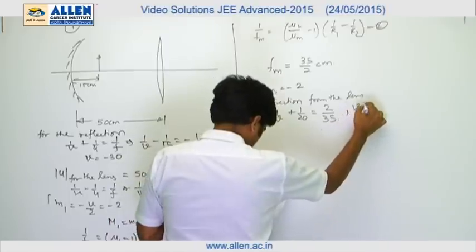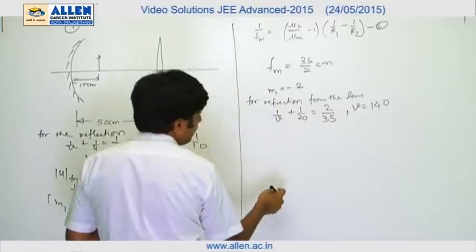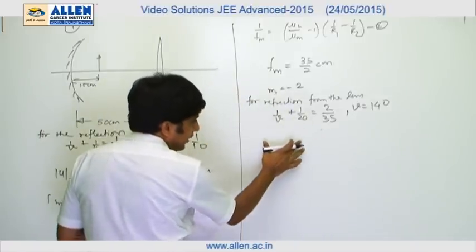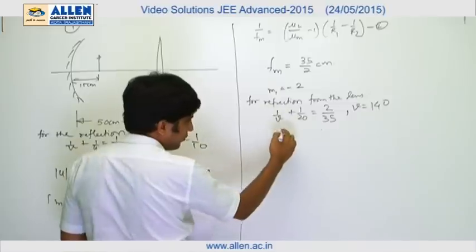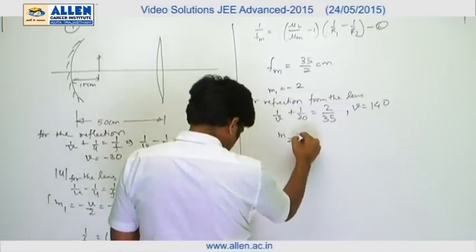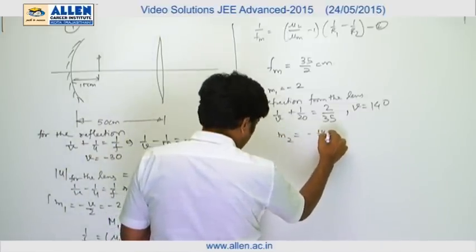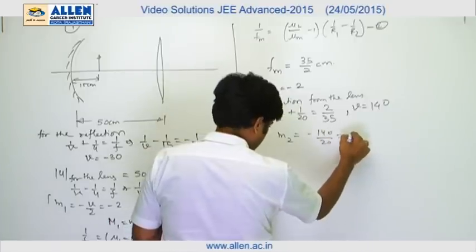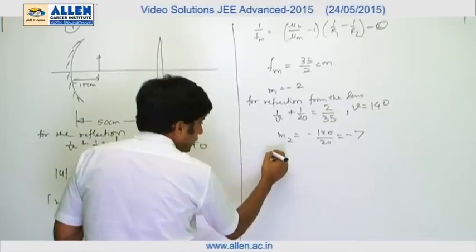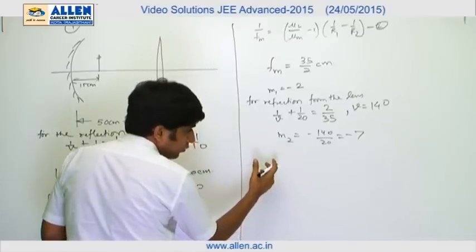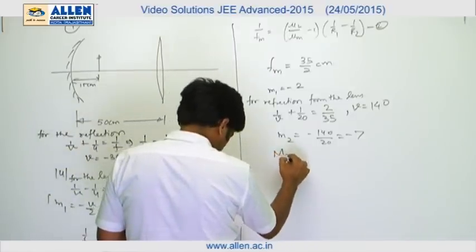Therefore, magnification for the image formed by the lens will be given by m2, that will be minus 140 upon 20, that means minus 7. And hence net magnification due to final image will be given by m2 equals to minus 7 into minus 2, that is 14.